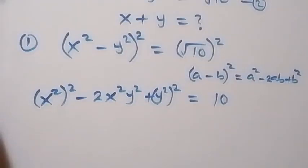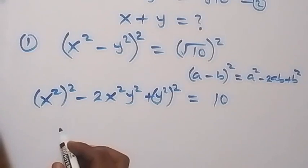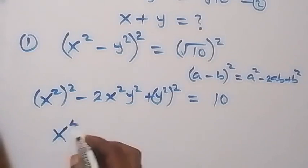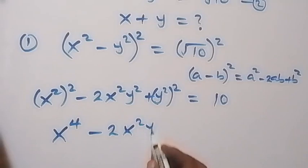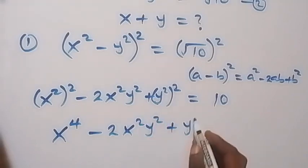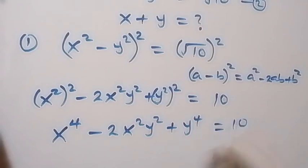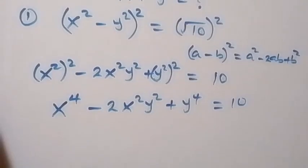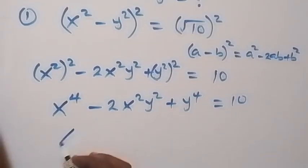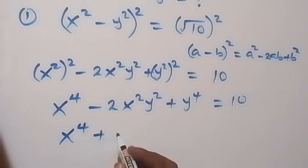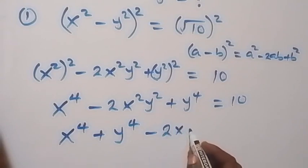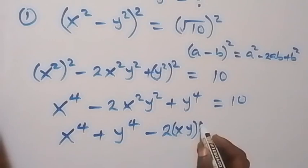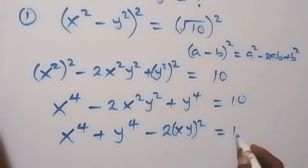The powers multiply by the indices, so we get x raised to power 4 minus 2x squared y squared plus y raised to power 4, which equals 10. Grouping the fourth power terms together, we have x to the power 4 plus y to the power 4 minus 2 times xy squared equals 10.